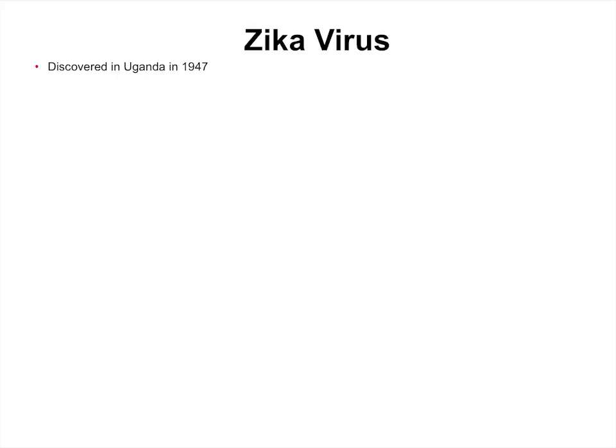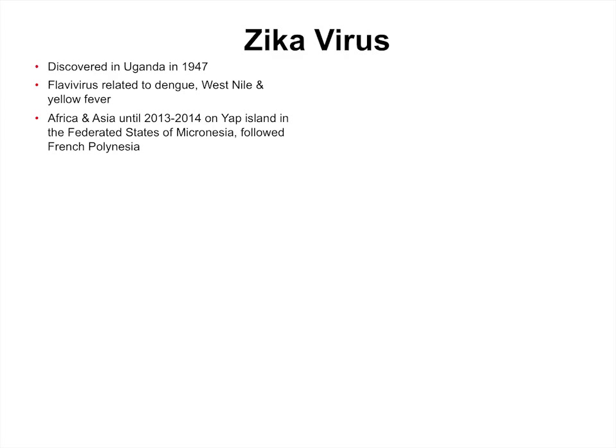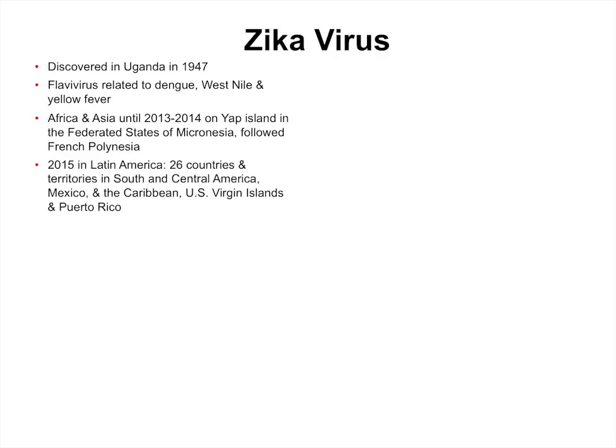Then Zika came along. Zika virus was discovered in Uganda in 1947. It's a flavivirus, closely related to dengue, West Nile, yellow fever, and Japanese encephalitis. It remained in Africa and Asia until about 2013–2014, when it was recovered from Yap island in the Federated States of Micronesia, followed by an eastward progression through French Polynesia. In 2015 — possibly 2014 but confirmed in 2015 — it was in Latin America. Presently it's in 26 countries and territories. It has not taken long for it to spread to the extent that it has.